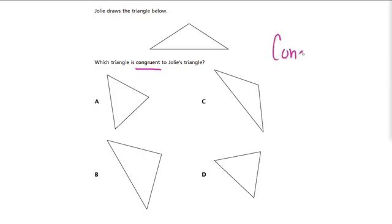So the word here is congruent. You might have come across this before. What it essentially means when two shapes are congruent—this is referring to shapes.